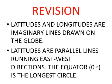So, latitudes and longitudes are imaginary lines drawn on the globe. Next point is: latitudes are parallel lines running in the east to west direction. The equator is zero degrees, which is the longest circle.